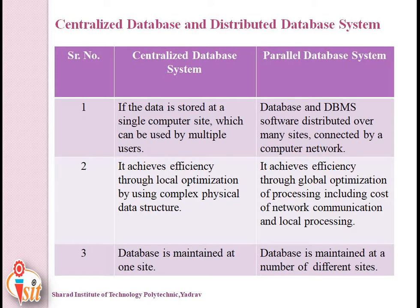The second difference is that a centralized database system achieves efficiency through local optimization by using complex physical data structures. A parallel database system achieves efficiency through global optimization of processing, including the cost of network communication and local processing. In a centralized database system, the database is maintained at only one site, but in a parallel database system it is maintained at a number of different sites.